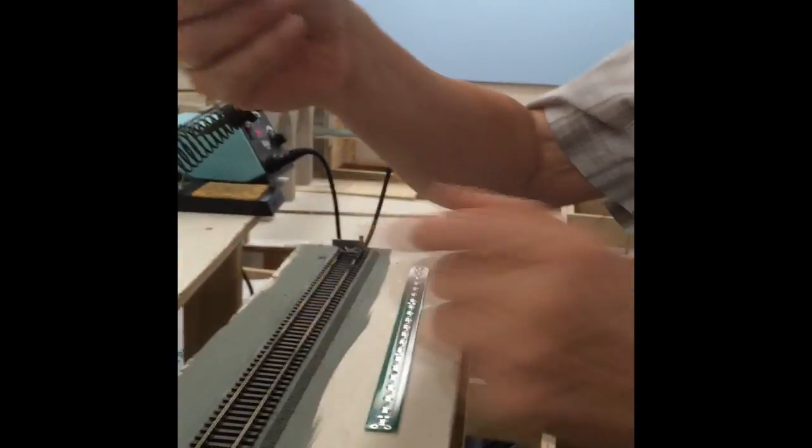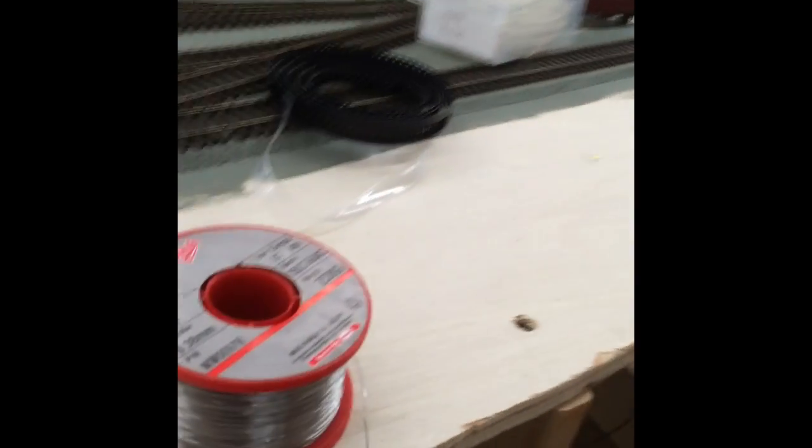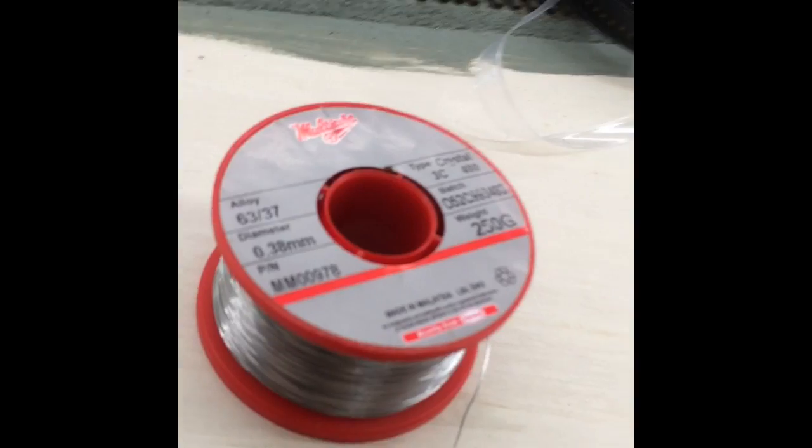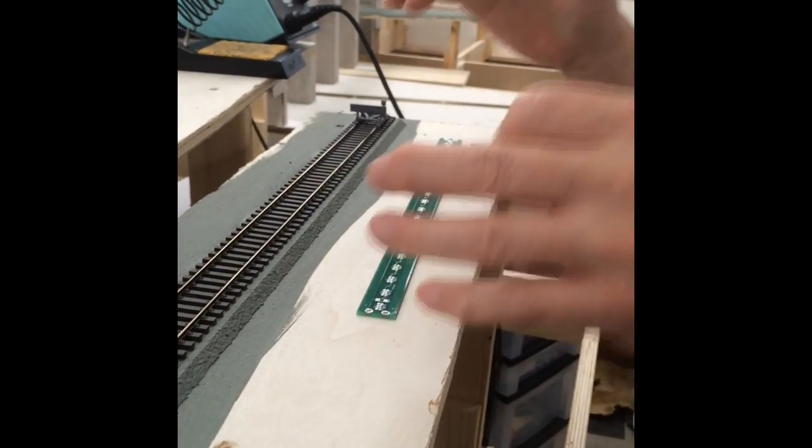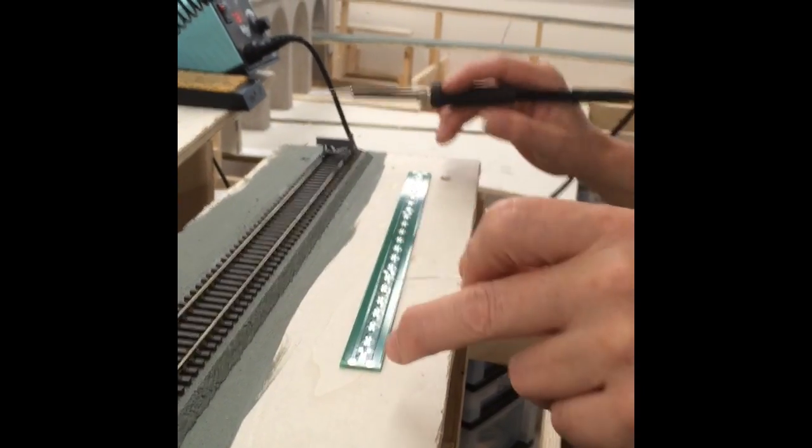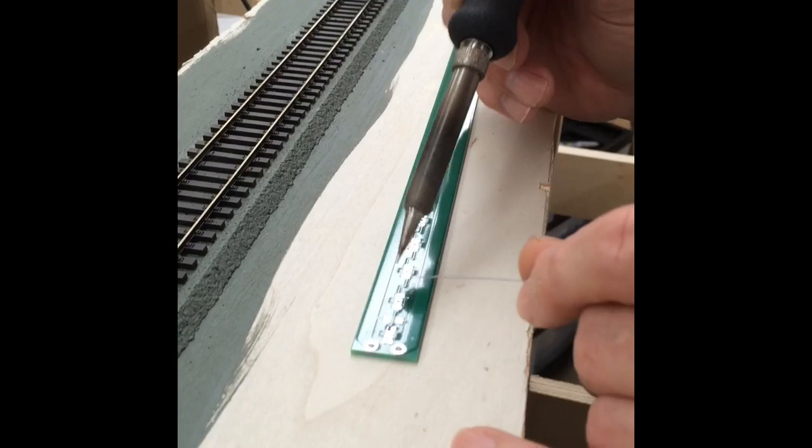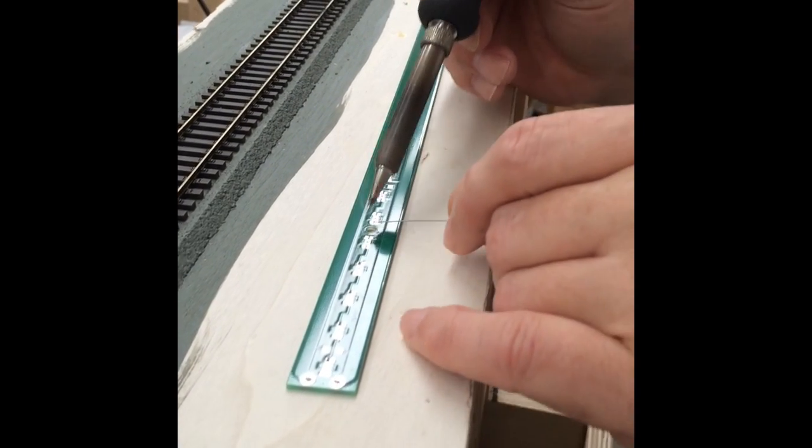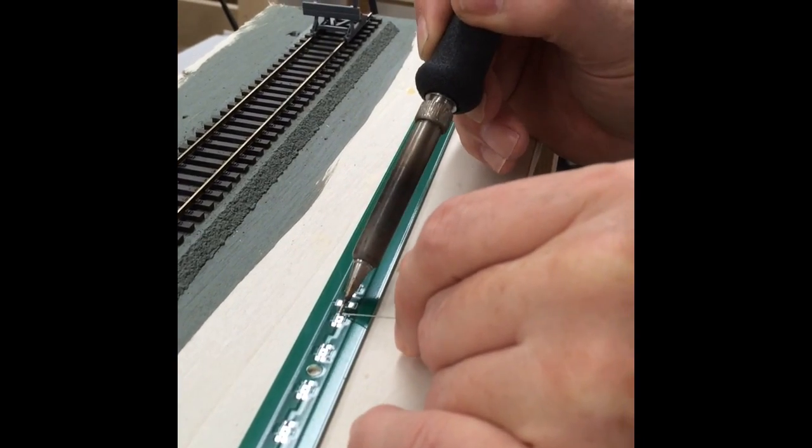So you take a little bit of solder. This is 0.3 millimeter or something. It's some deposit for everyone. Otherwise you can't put them on. So I use the one pad. It has 21 LEDs. So I make a little deposit on one pad all the way across here.